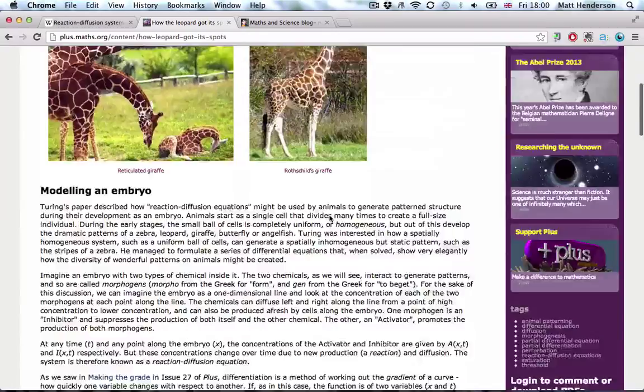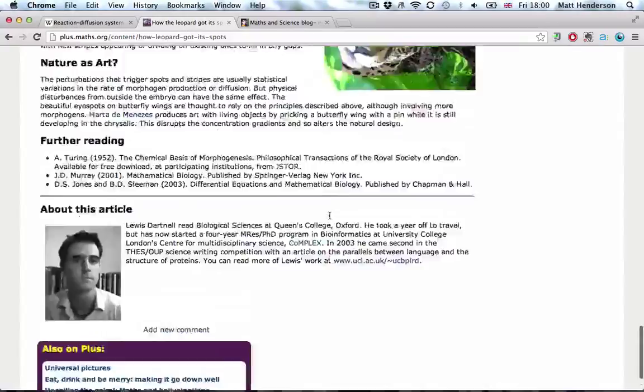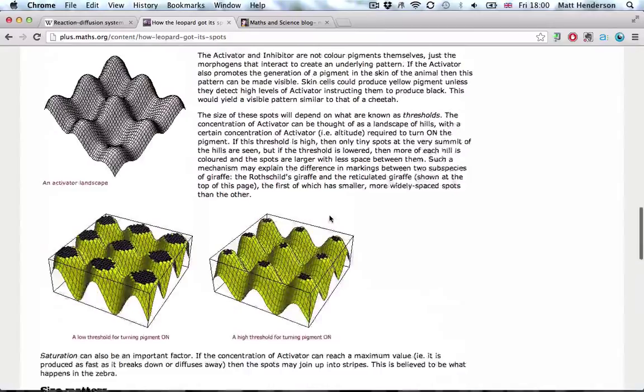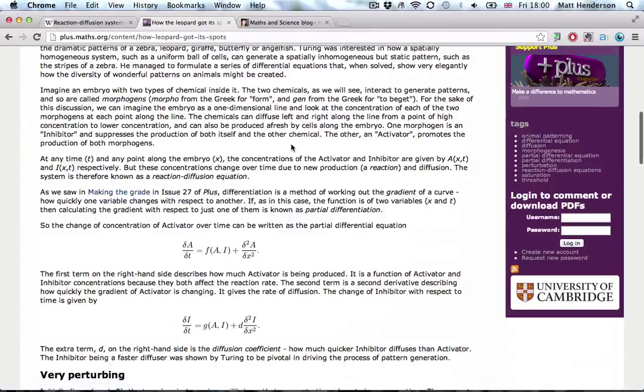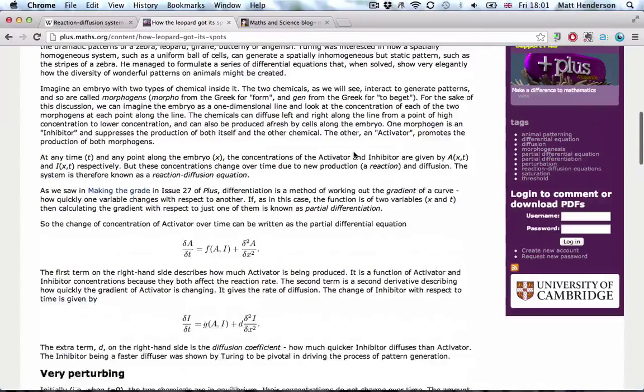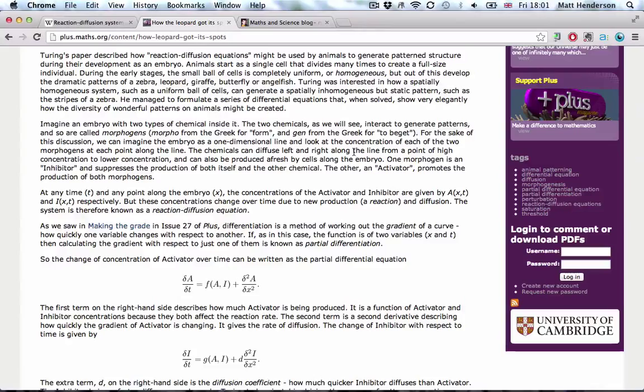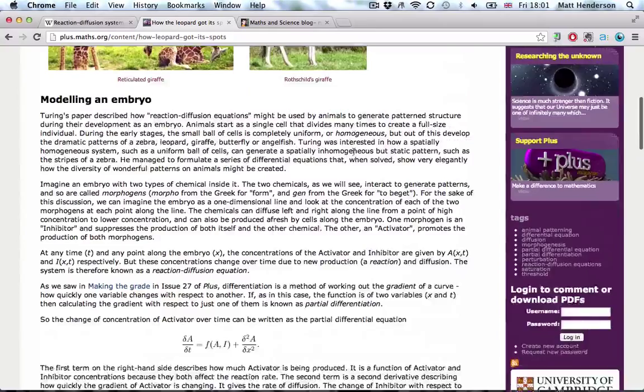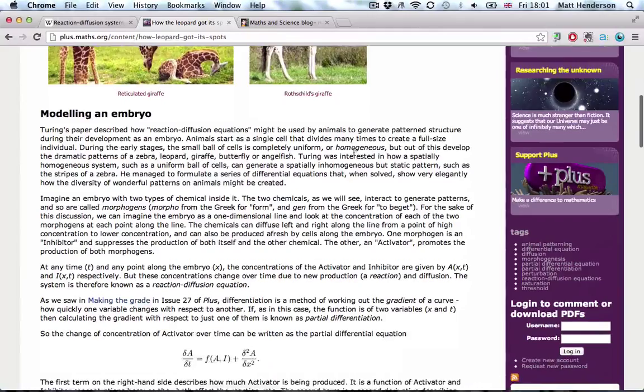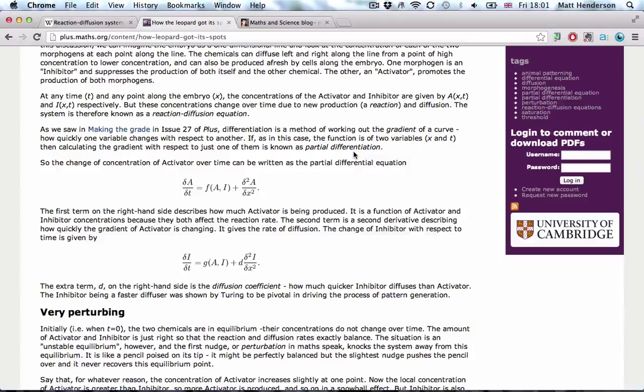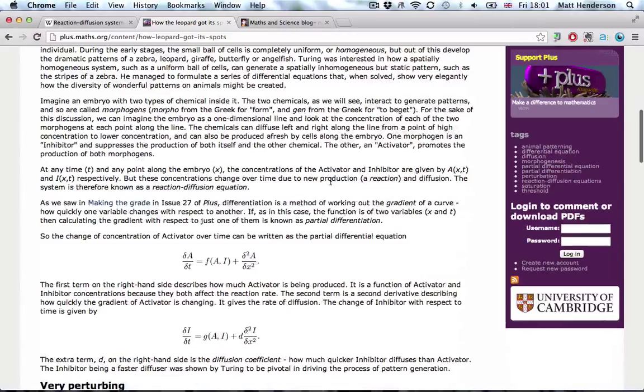So I want to toy with visualizing this in Mathematica and then explain in a blog post how it works. As a brief introduction, you have an activator and an inhibitor, which are two chemicals present on the skin of a developing embryo. The activator causes the skin to go dark color and the inhibitor inhibits that expression. The activator will cause more of the activator to be present as well as the inhibitor, but the activator doesn't diffuse as quickly as the inhibitor. And so hopefully we'll see why that causes patterns to make like stripes.